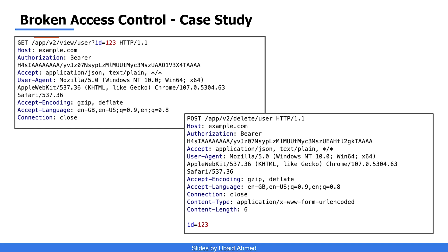When testing your application, familiarize yourself with it and observe the requests and responses. Try to fiddle with certain parameters with the objective of performing actions on behalf of another user. That's all you have to do to find broken access control vulnerabilities. I hope you found this video interesting — comment below and let me know. I'll be back with more videos explaining different vulnerabilities. Till then, goodbye and happy learning.